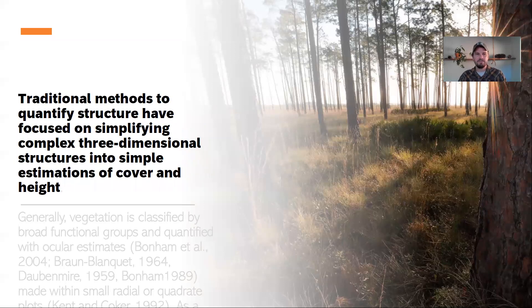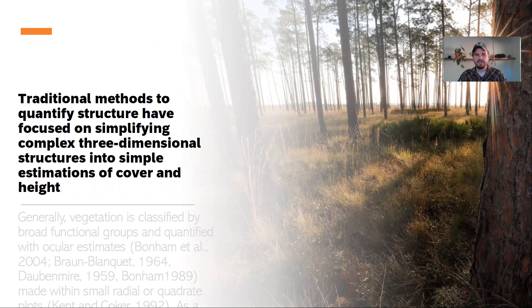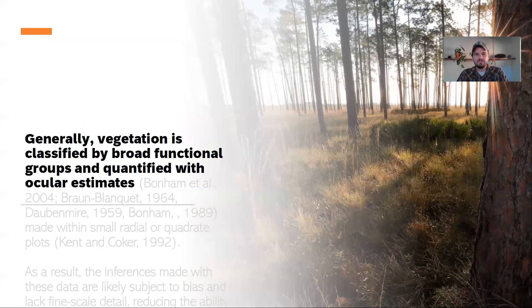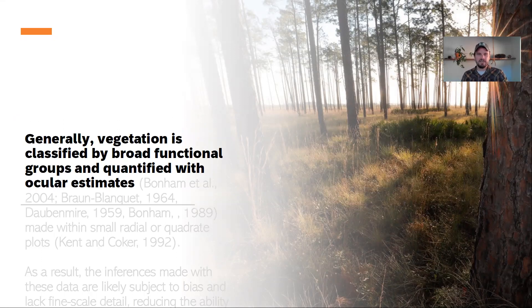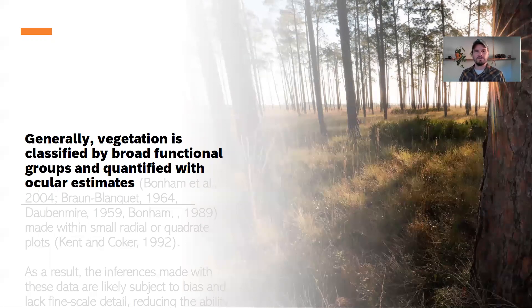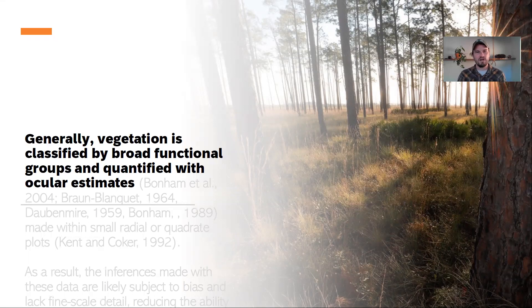In traditional methods, quantified structure focused on simplifying three-dimensional structures, these really complex three-dimensional structures that are out in the forest, into simple estimations of cover and height, and vegetation is generally classified by broad functional groups, thanks to work from Braun-Blanquette and others. Like Daubenmire, we classify things in ocular estimates, which makes them very easy to repeat across different observers over time, but then we're also stuck with these broad ranges in which to estimate covers, such as 5 to 25 percent cover.